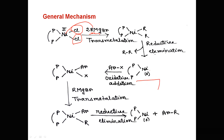The nickel(0) species required for Kumada coupling undergoes oxidative addition with aryl halide or vinyl halide to give a nickel(II) complex. Transmetallation then occurs with the Grignard reagent: the X group attached to nickel is exchanged with magnesium to give magnesium-BrX, and the R group attached to magnesium is exchanged with nickel. Reductive elimination then occurs to give the R-Ar product, which is the desired product, and nickel(0) species is regenerated.